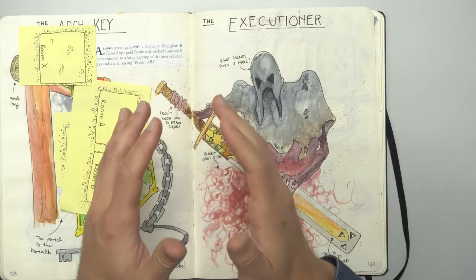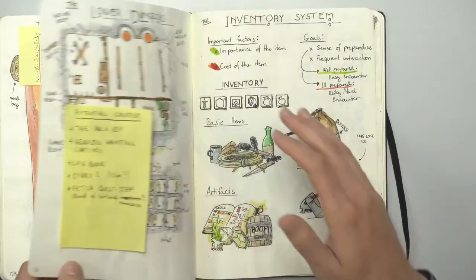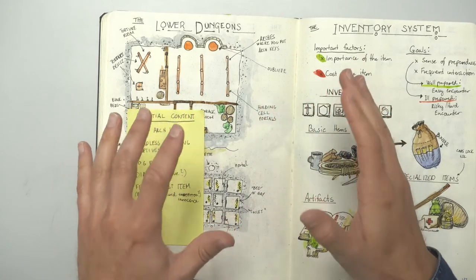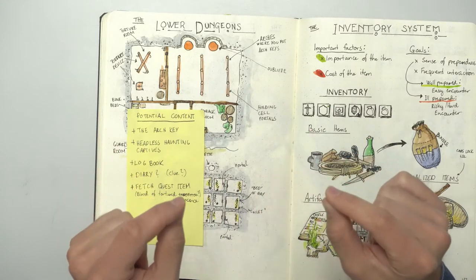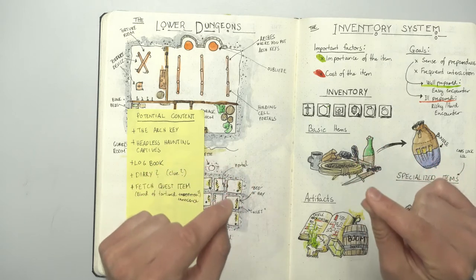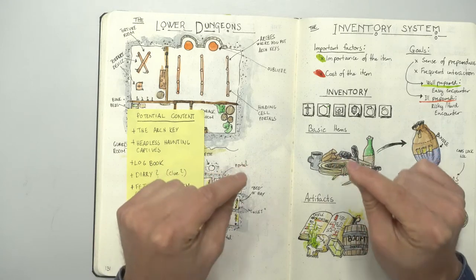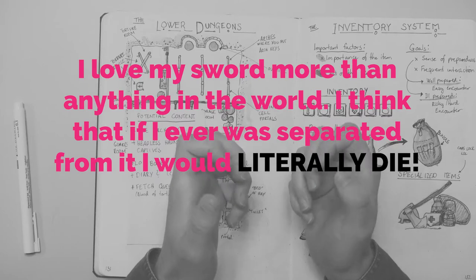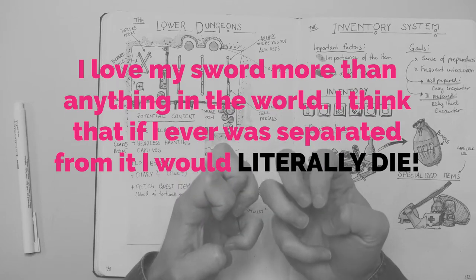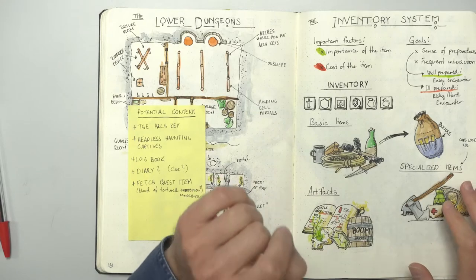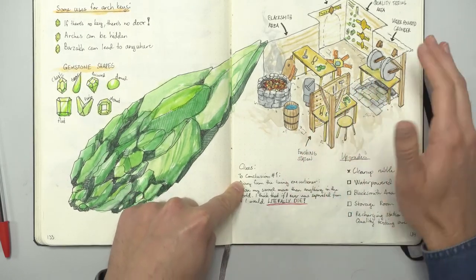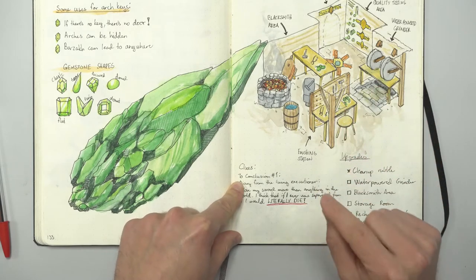Now, we need to tell the players in three different ways that they have to lure the executioner into the barzak without the sword. The first thing I thought of was the diary that I mentioned here. A diary written by the then living executioner, which describes the executioner's sadistic passion for beheading people before the executioner became a ghost. And in the diary, there should be a passage saying, I love my sword more than anything in the world. I think that if I ever was separated from it, I would literally die. This diary I'm actually placing in the crystal workshop.